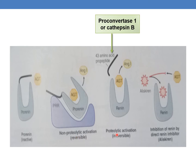One important point is direct inhibition of renin by aliskiren. Aliskiren is a competitive renin inhibitor with greater affinity for the active catalytic site of renin than angiotensinogen.